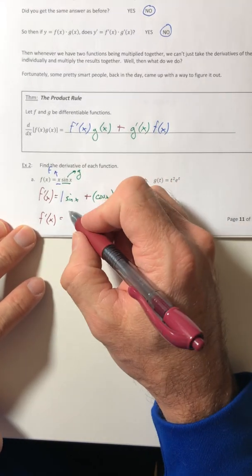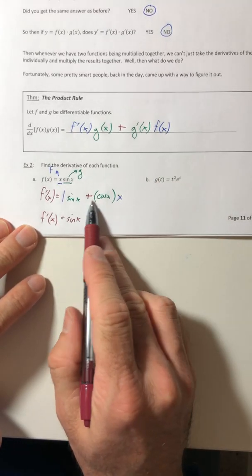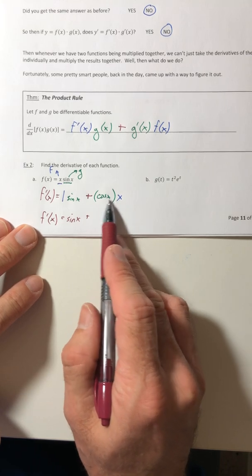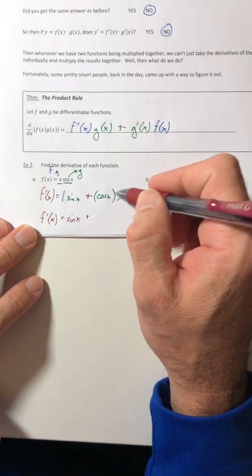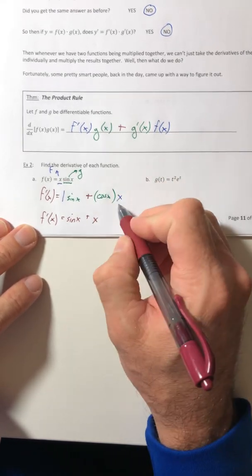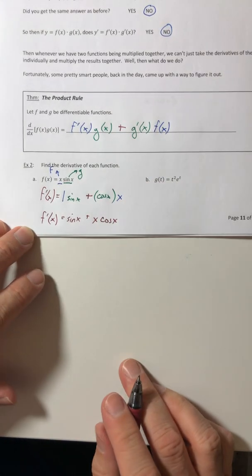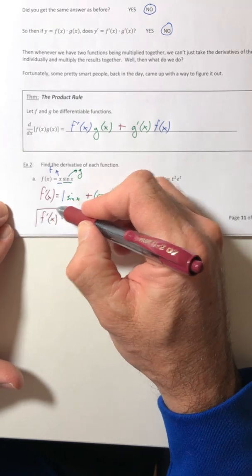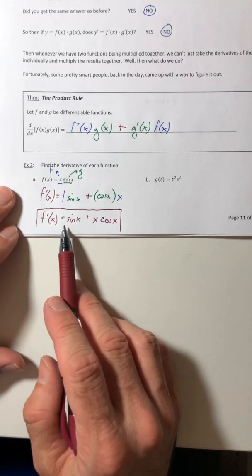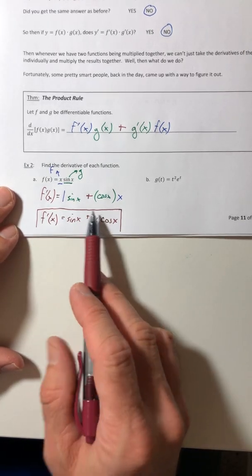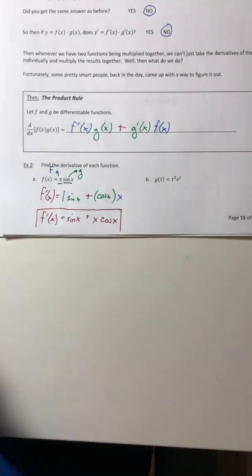So the only thing left to do here is just to clean it up. So like one times sine is just sine. And then here you have cosine of x times x. So just so we don't get confused on like, are these two x's being multiplied together? And they're not because it's x times the entire thing. We're just going to put that single x in front. So x cosine of x. And that would be your derivative. So typically when you use the product rule, your derivative comes out larger, or has more terms in it than the original function.